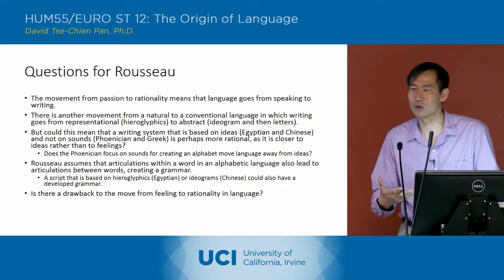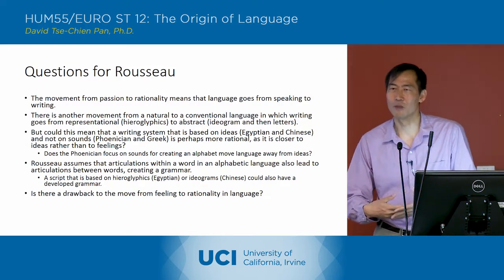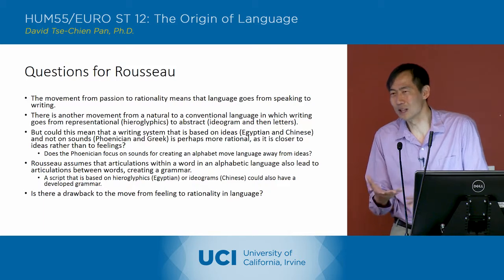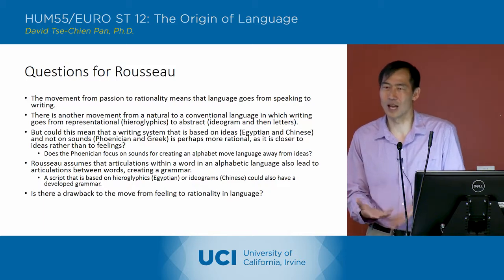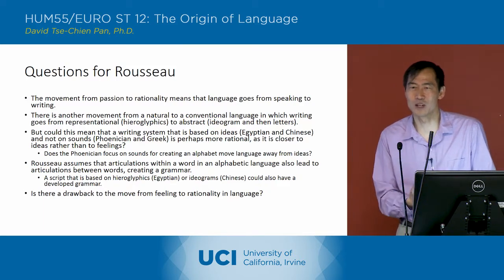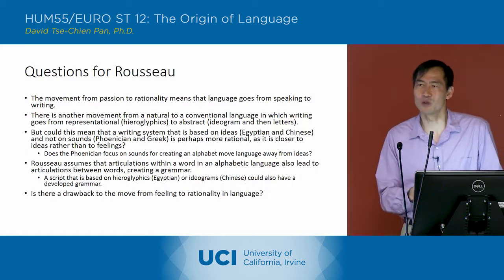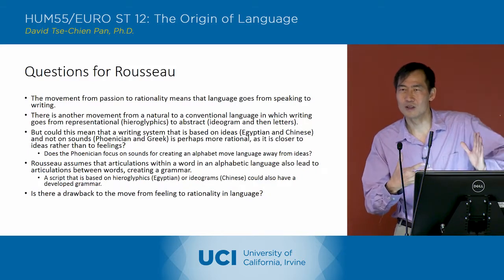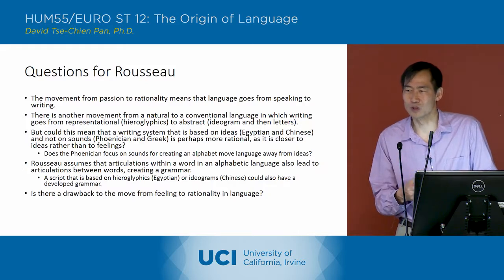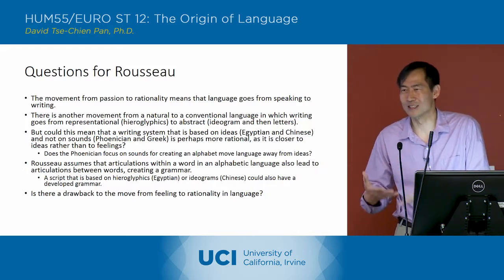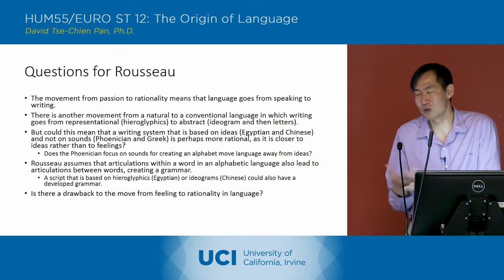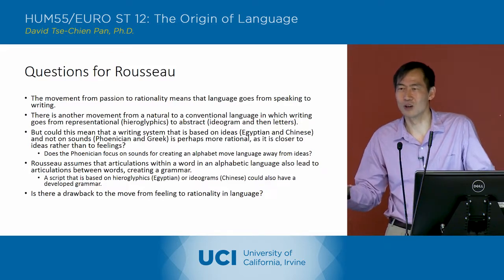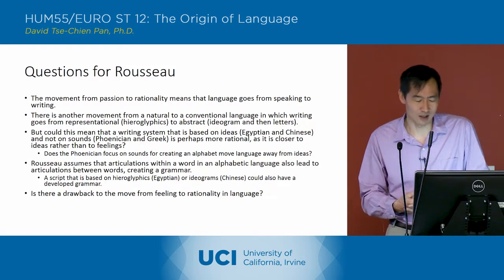It might be that the origin of language was a kind of first language that really wasn't like any languages that exist today. There might have been some other form of language we would have to imagine as the earlier stage, one in which all the languages we know of — certainly those that have developed writing systems — are already way beyond that initial stage.